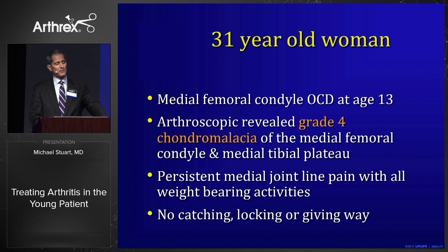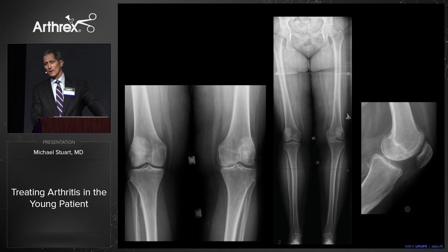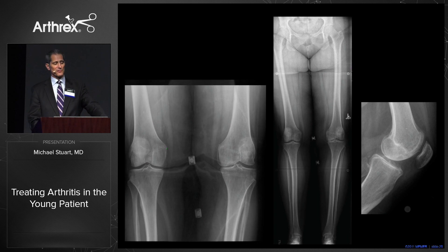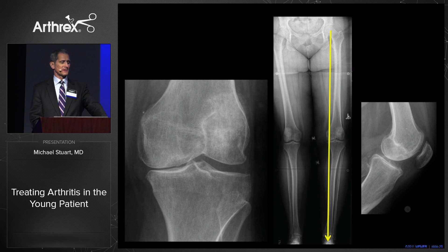Here's a 31-year-old woman who had medial femoral condyle osteochondritis dissecans at age 13. She developed grade 4 chondromalacia of both the medial femoral condyle and medial tibial plateau, is very symptomatic, with obvious genu varum, antalgic gait, medial pseudolaxity, and intact cruciate ligaments. This is an arthritic knee in a 31-year-old woman. Some colleagues would do a total knee arthroplasty, and maybe I can't fault them for that — but in my practice, this is a joint-preserving situation.